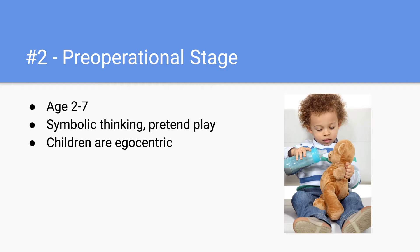Next we have the pre-operational stage, and this is from ages two to seven. Importantly, in this stage children begin to develop symbolic thinking and also pretend play. As you can see in this picture on the right, this baby is engaging in pretend play because he's treating his teddy bear as if it's a child and pretending that he's feeding it.